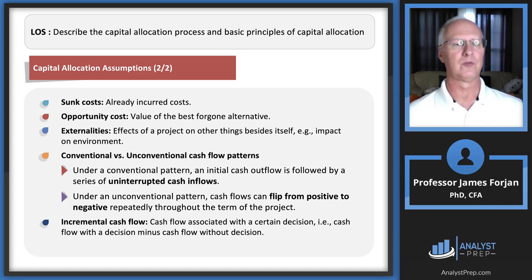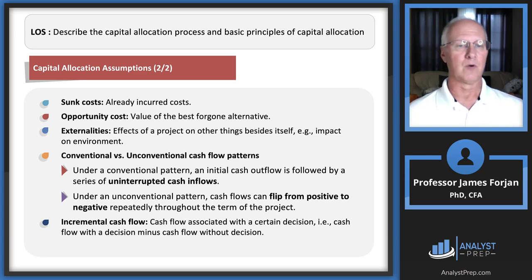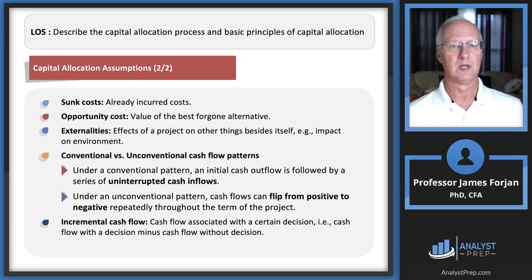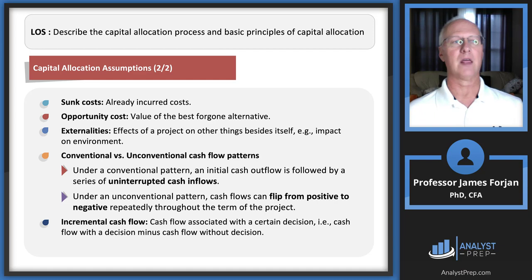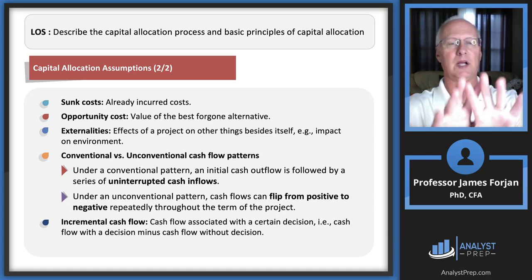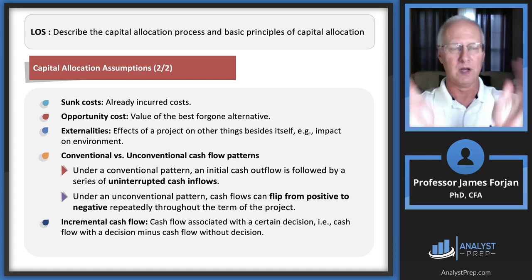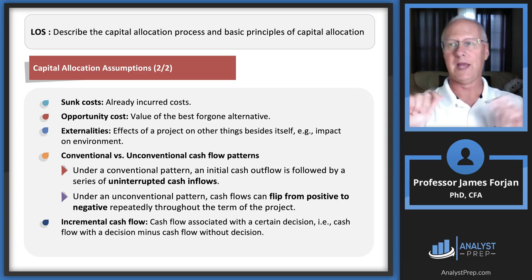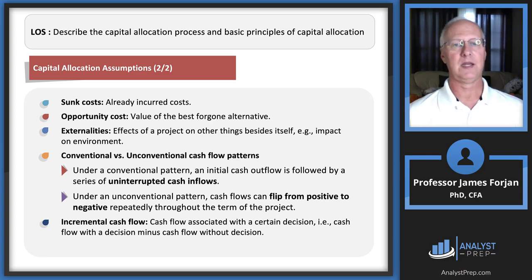Sunk costs are ignored. Opportunity costs — the value of the best foregone alternative — are considered. We also need to consider externalities: the effects of a project on a bunch of other things, like the environment. Externalities is an economics concept that says we're not operating in a vacuum — there's stuff that flows off, and that could be a positive externality or a negative externality.